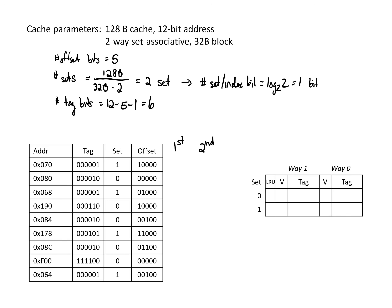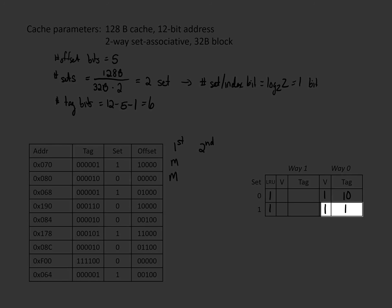For the first address, we're going to set 1. Since we haven't done anything yet, we certainly don't have it, so we're going to set way 0 to valid and put tag 1 in way 0. We're going to say that the least recently used way is now 1, since we just recently accessed way 0. For the next address, we're going to set 0. We don't have this yet, so we fill in valid with tag 1,0, and we set the least recently used to 1. Both of these were misses. For the third address, we're looking for tag 1 in set 1 — we find that tag 1 is already in our cache and it's valid, so this is a hit.